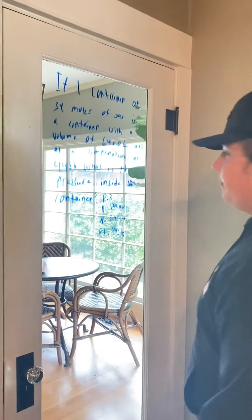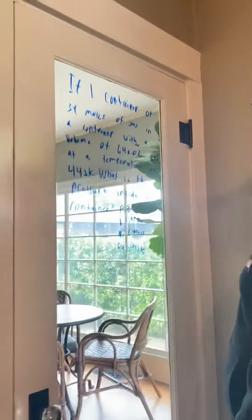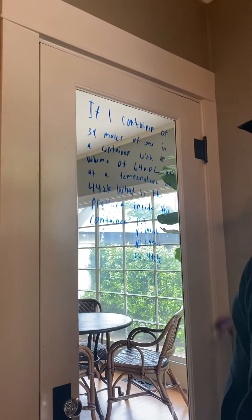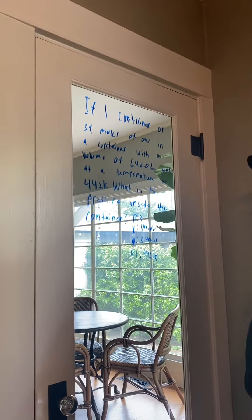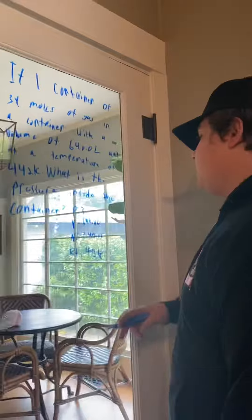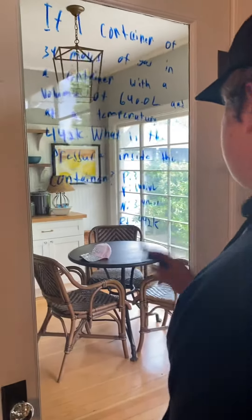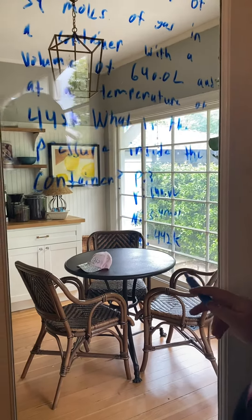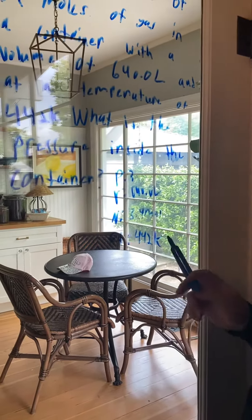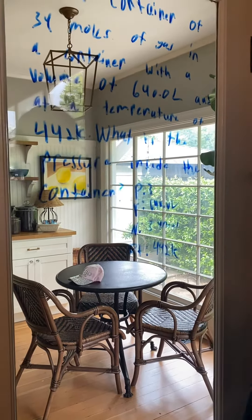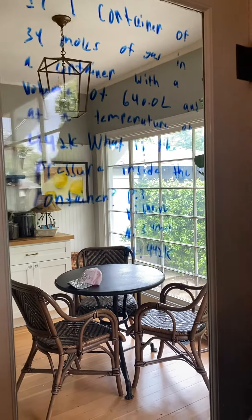This is the problem for the ideal gas law. If one container has 3.4 moles of gas in a container with a volume of 640.0 liters and at a temperature of 442 Kelvin, what is the pressure inside the container? Right now we have the volume which is 640.0 liters, n = 3.4 mol, and the temperature is 442 Kelvin.